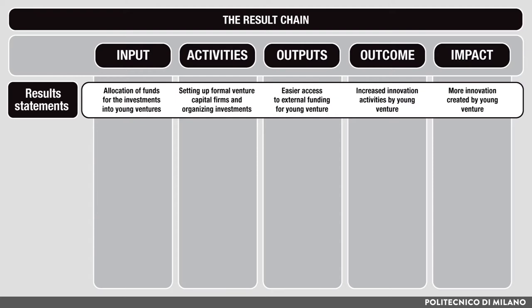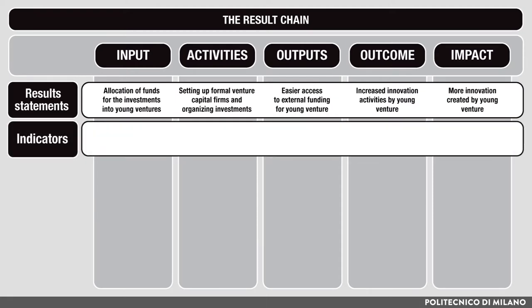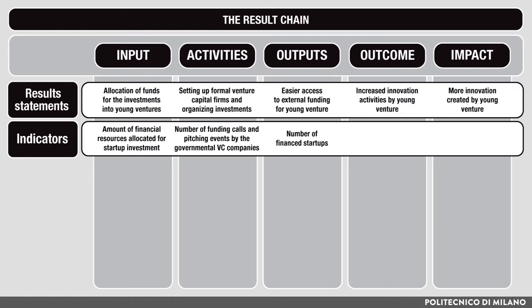Once we have the result statements defined, let's try to identify appropriate ways to measure them. We can express the inputs as the amount of money allocated for financing startups throughout the program. Second, we can proxy the activities as the number of funding calls and pitching events organized by the governmental VC company. Third, we can measure the number of financed startups to quantify the outputs of the program. Next, we can measure the intended outcome as the percentage of revenues startups invest in R&D. And finally, we can measure the number of patents filed by the funded startups as a proxy of startups' innovativeness.